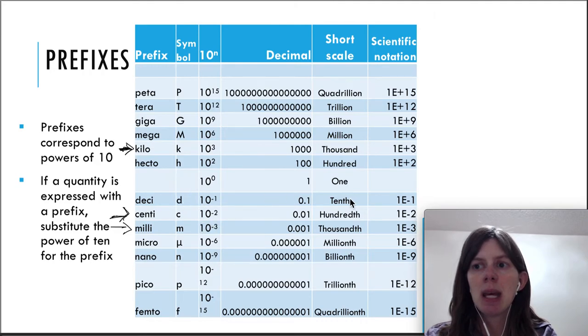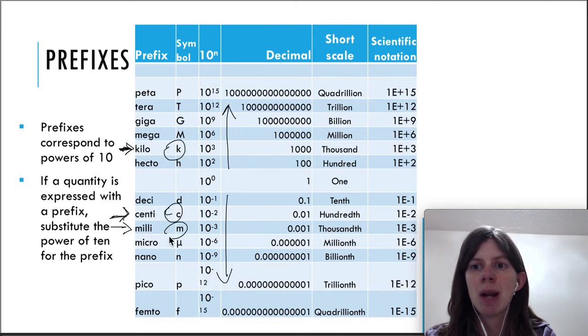Centi is 10 to negative 2 and milli is 10 to negative 3. Anything here and below is going to be a number smaller than 1. Anything above here is going to be a number greater than 1. So if you see one of these prefixes, especially a k, a c, or an m, if you see them in front of a unit, then all you need to do is substitute the power of 10 for the prefix.